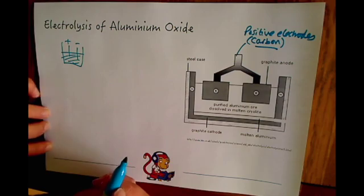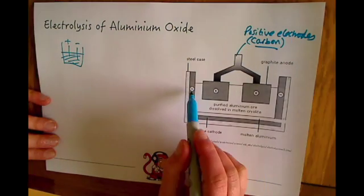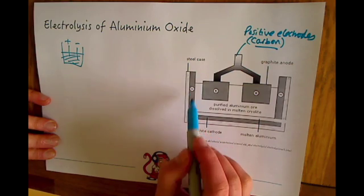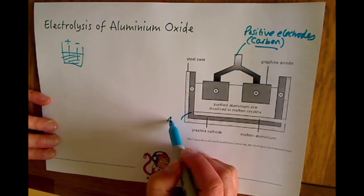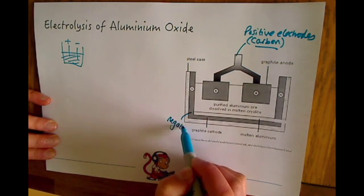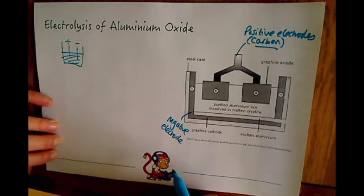The negative electrode actually sits around the outside—you can see it running all the way down here, along the bottom, and over here. So the negative electrode runs all the way around the outside.